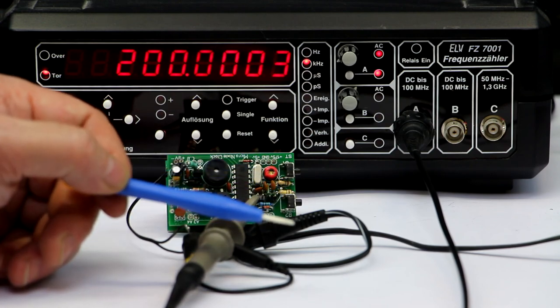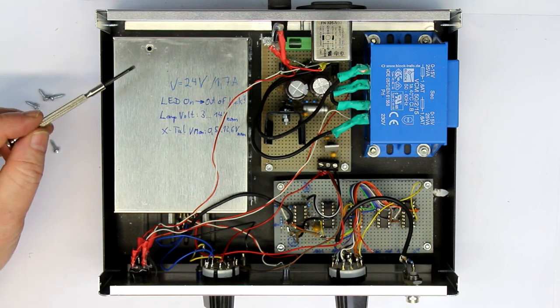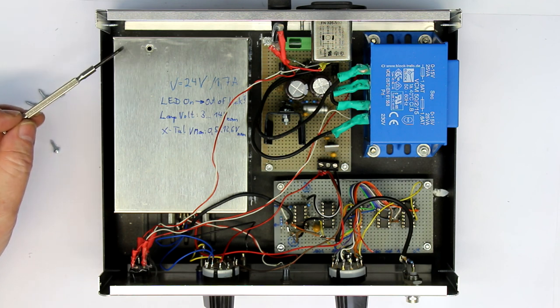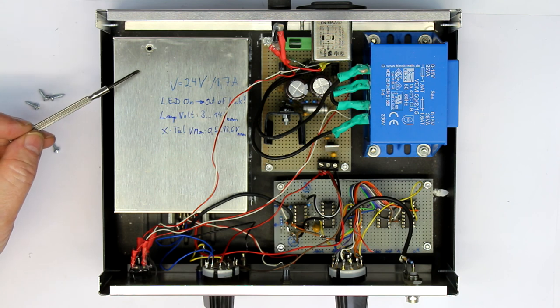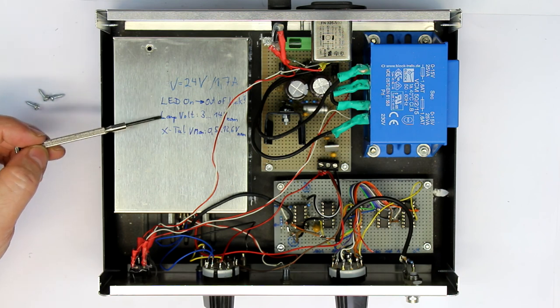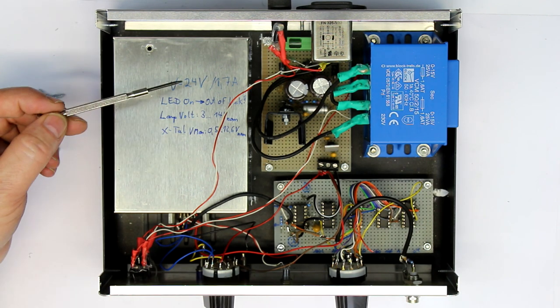Now let's take a look inside our rubidium frequency standard. So that's how it looks inside. This is where the magic happens, the rubidium frequency standard. It's an Efratom LPRO-101. You can find the data sheet with Google without any problems. You can see I've written the power supply and the control voltages here on the back, just because I don't have the data sheet always with me.